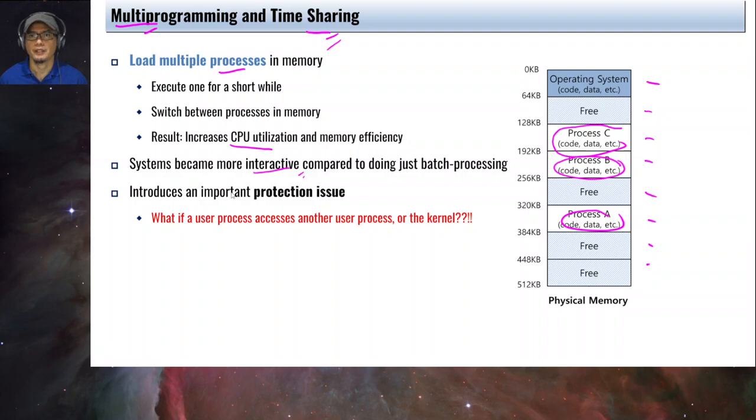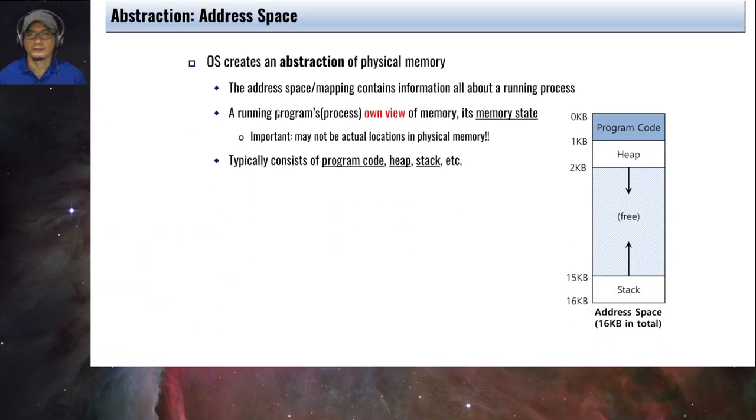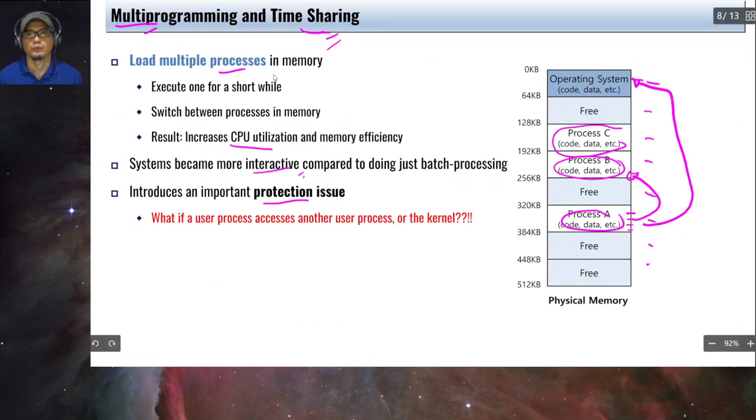And with multiprogramming, it also introduced a protection issue. What if a user process accesses another user process or the kernel? Let's say in this illustration, process A without any protection might try to attempt to read the memory of process B, or it can even attempt to write or read the contents of the operating system. MS-DOS, which is an early operating system from Microsoft, actually has this problem because it allows user processes to access the memory area of the kernel, command.com, the command interpreter for example.